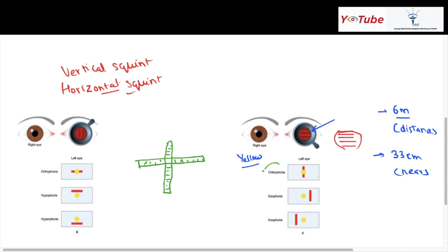The Maddox tangent scale has markings in both the horizontal and vertical planes. In orthophoria — meaning no squint — the dissociated vertical bar and the right eye's image overlap exactly. In esophoria, which is a convergent squint, the left eye's horizontal bar is displaced slightly outward because the convergence deviation dissociates the image in the opposite direction. The amount of squint can be read directly from the scale.